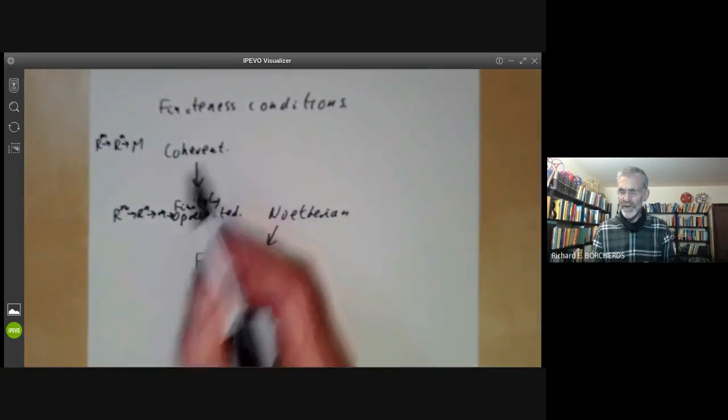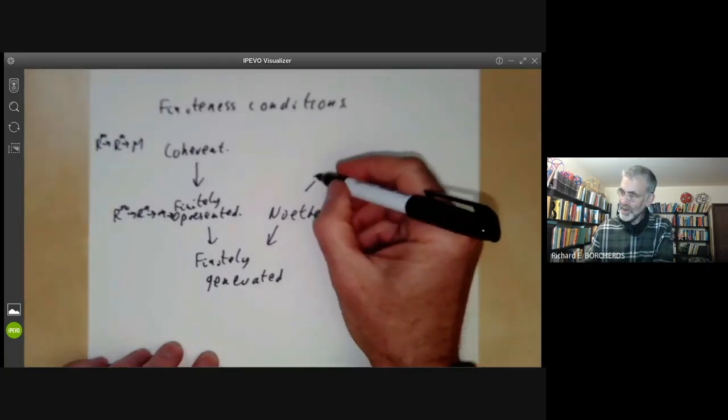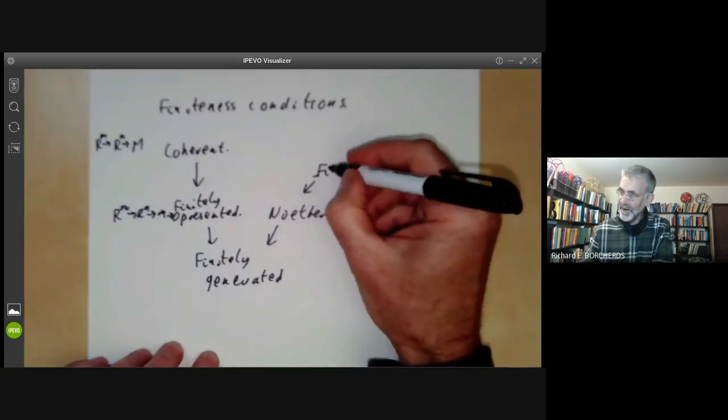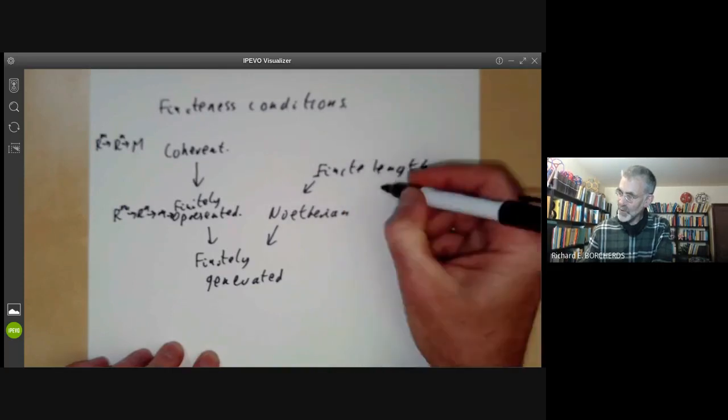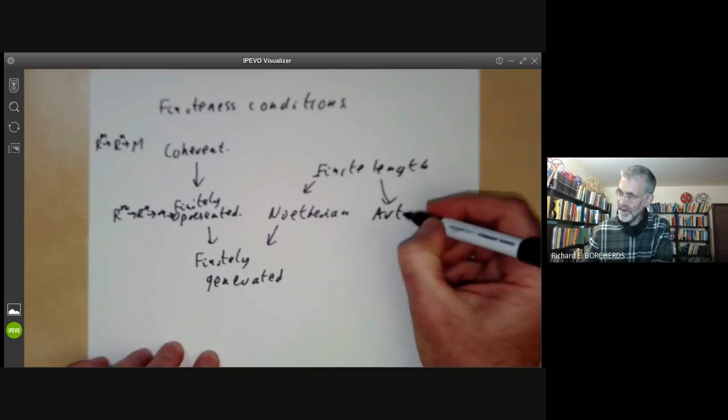Coherent modules don't actually appear all that much in commutative algebra, but they appear quite a lot if you do sheaf theory over complex analytic manifolds. There it turns out that the rings you get are generally not Noetherian and coherence turns out to be a useful property. We also mentioned the property of having finite length, which is equivalent to a module being Noetherian and Artinian.